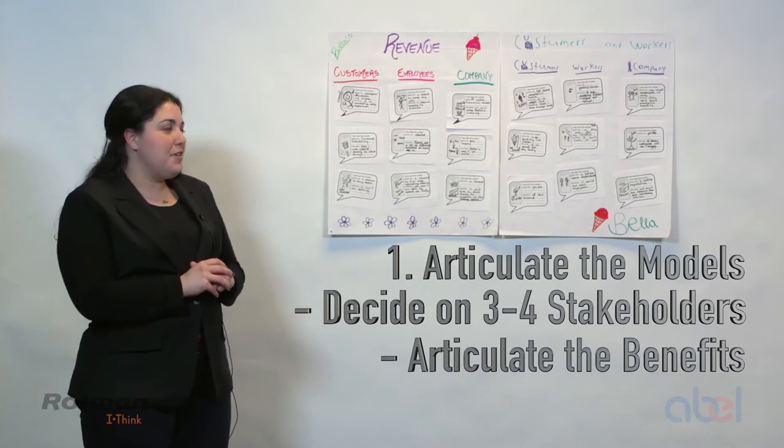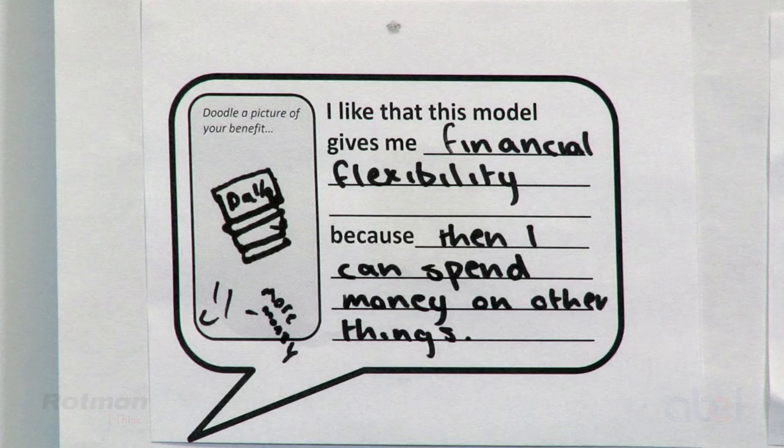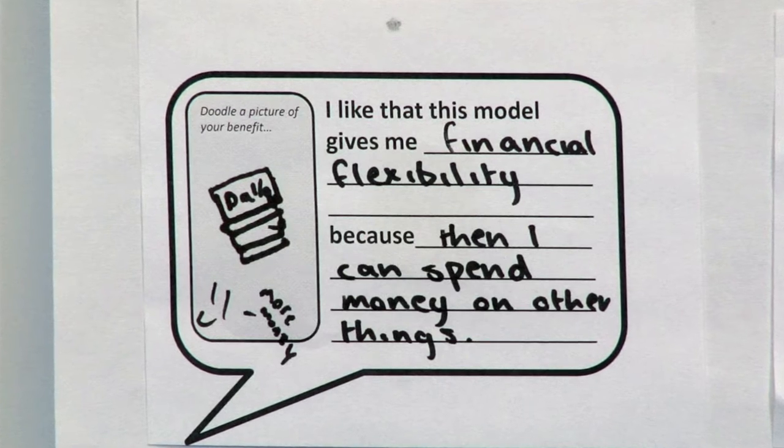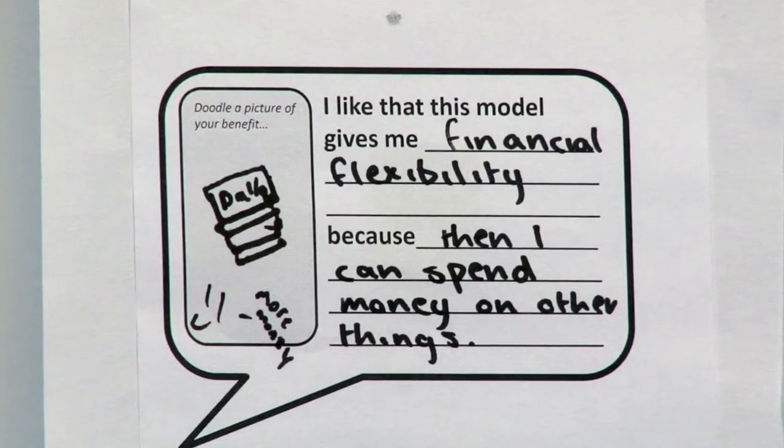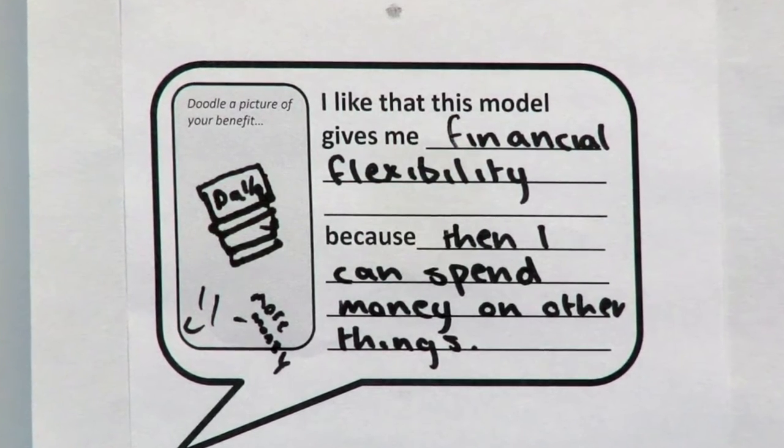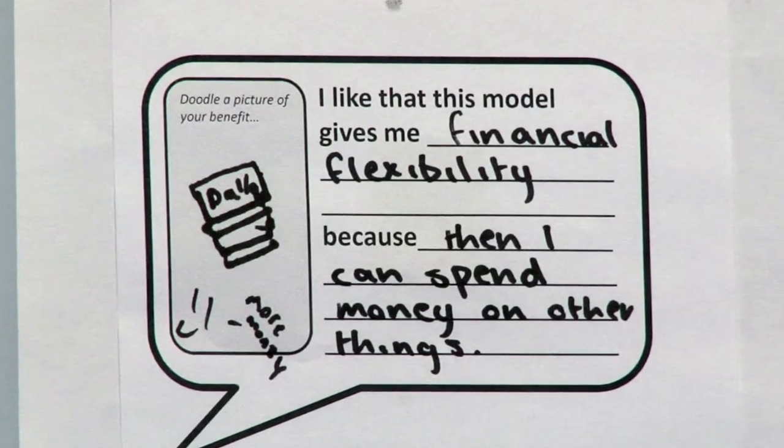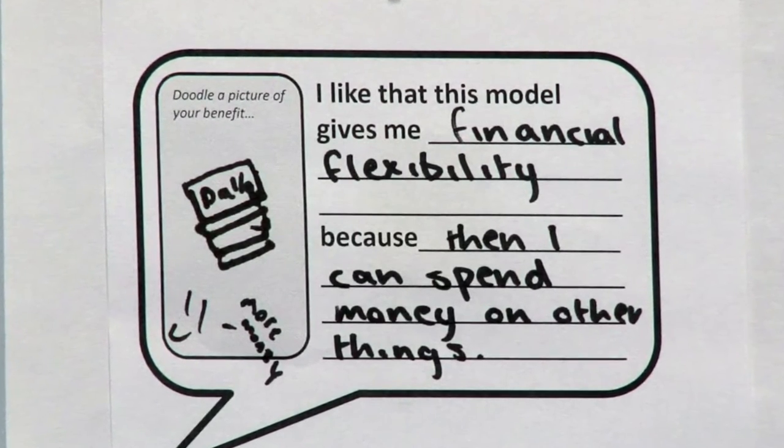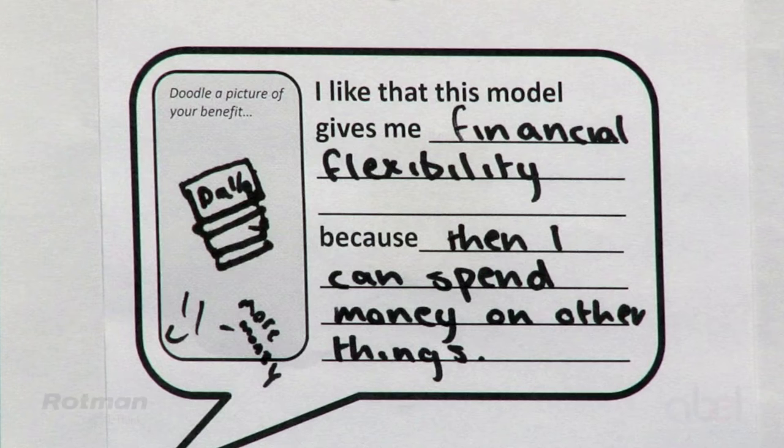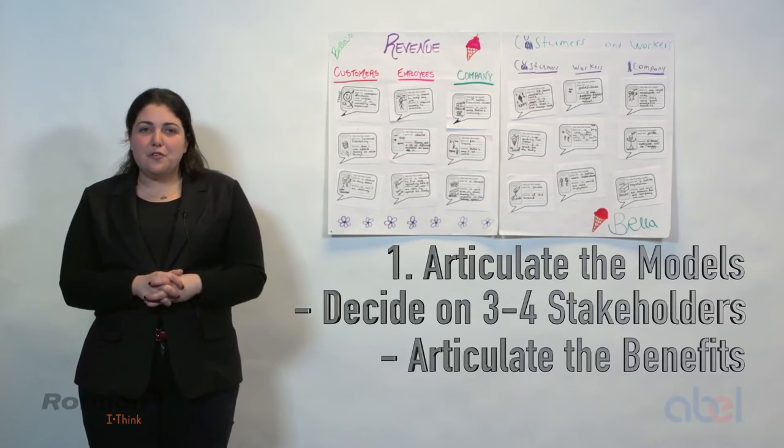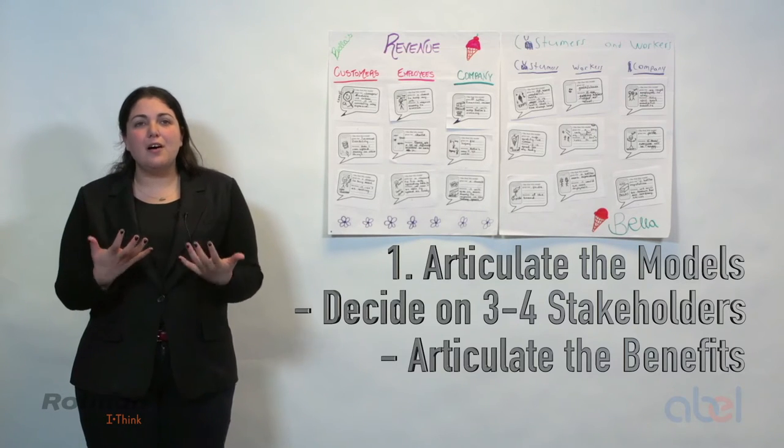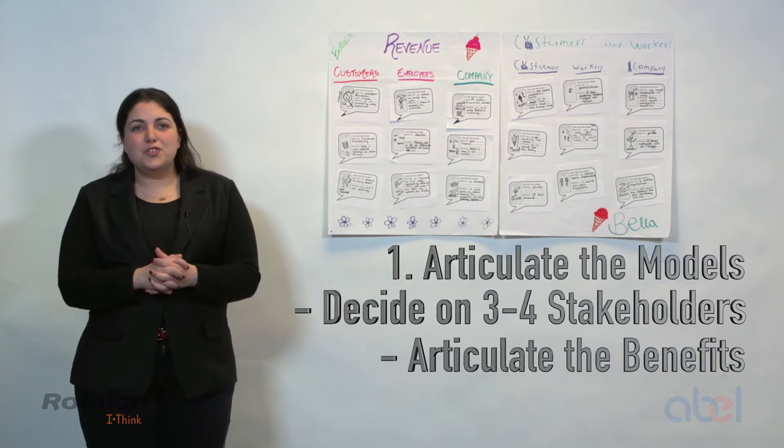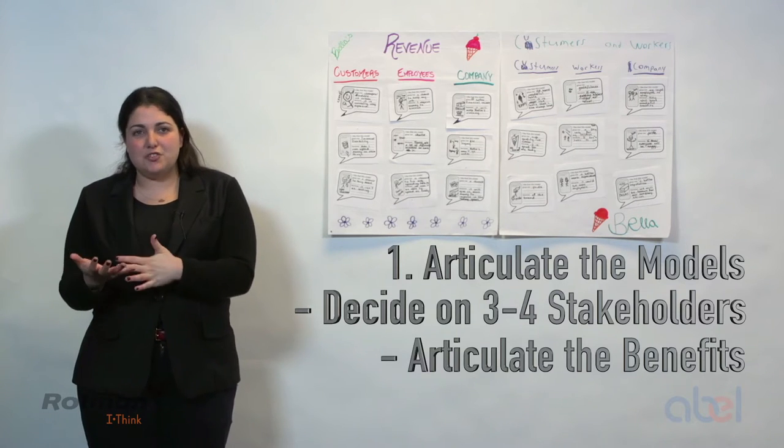I want to show you one particularly great example from student work. It says that from the customer perspective of why having a more traditional ice cream company is that I like that this model gives me financial flexibility, because then I can spend money on other things. The reason this is a good benefit is that it helps to uncover why would somebody choose to spend money on a more traditional ice cream than on one that might be more ethical, and might that be a key to unlocking new possibilities.